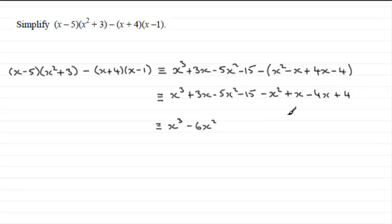For x terms we've got +3x plus another x is 4x, then subtract 4x, so there's no x term. For constants, -15 plus 4 is -11.